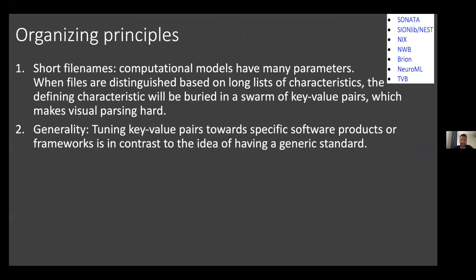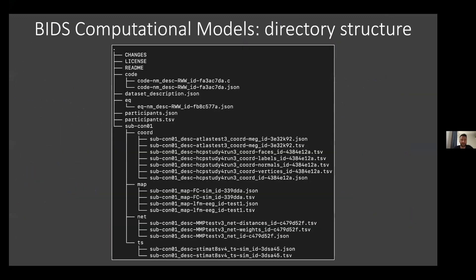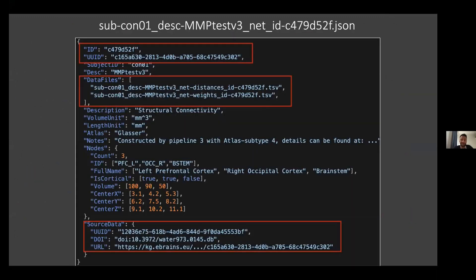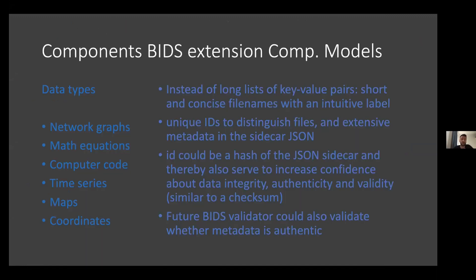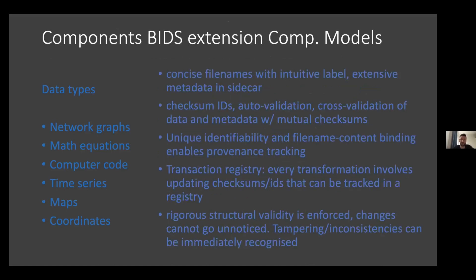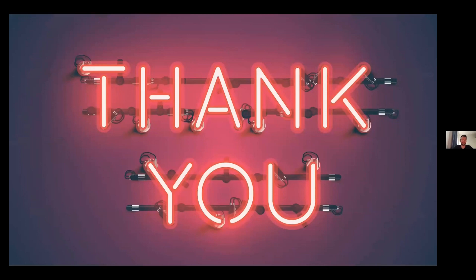The last point: we have a proposal for extending the BIDS standard for computational models. The basic idea is that we add an ID at the end of each file, which is a hash of the contents of the metadata, while the metadata contains a hash of the contents of the data. With this we ensure the integrity, authenticity, and immutability of the data — similar to a checksum. This could lead to a more reproducible BIDS standard in the future. Thank you.